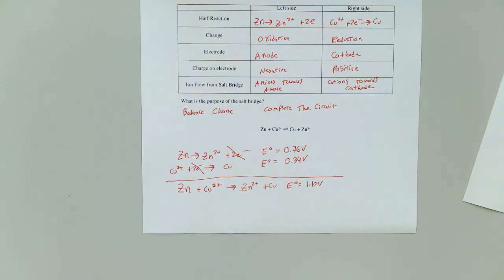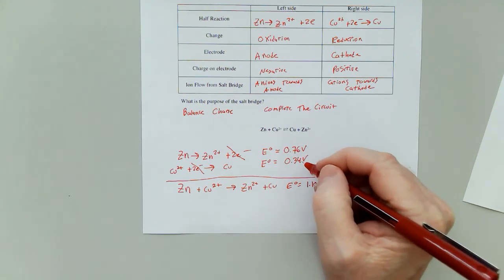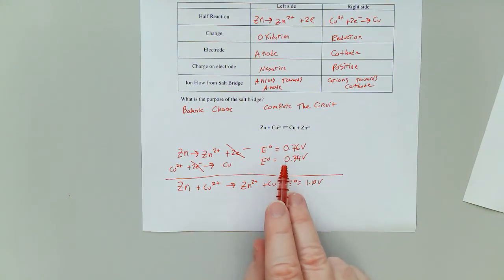Now some of you might be looking at this and thinking, hey, that looks just like Hess's law. Can I just multiply an equation by 2 and multiply the value by 2? The answer is no. You're never going to change what these values are. You might change the sign if you reverse a reaction, but you're not going to change the actual value.